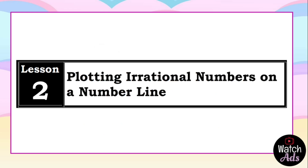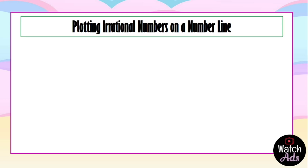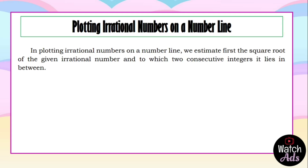Now for this lesson, we are going to talk about plotting irrational numbers on the number line. This is more like my lesson in determining which two integers the square root of a number lies between, or which two positive integers this irrational number is in between. You have to watch my previous video first before this one, as it would be harder to understand otherwise. In plotting irrational numbers on a number line, we estimate first the square root of the given irrational number and determine which two consecutive integers it lies between.